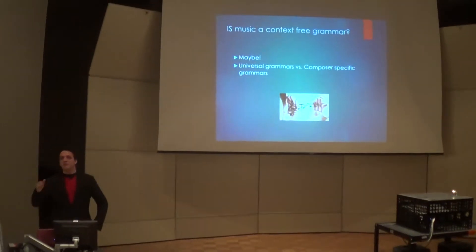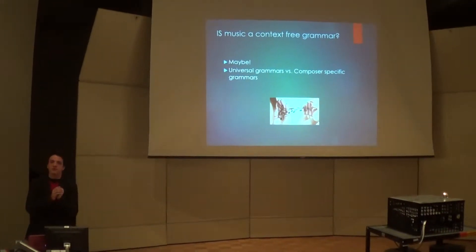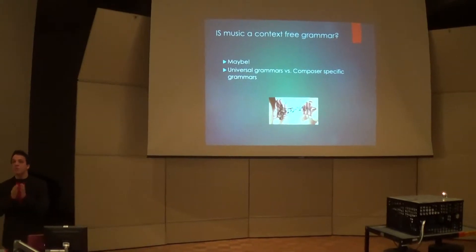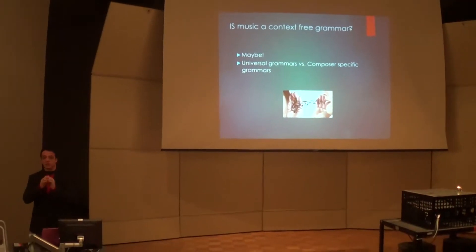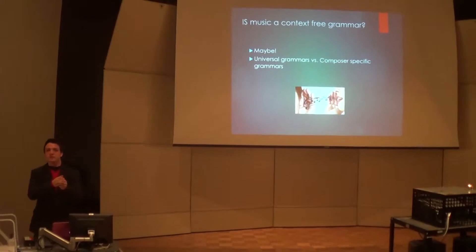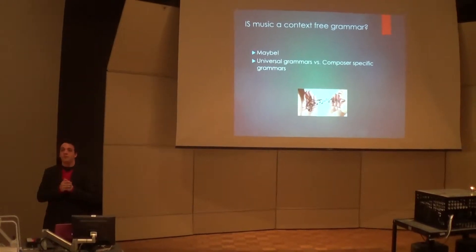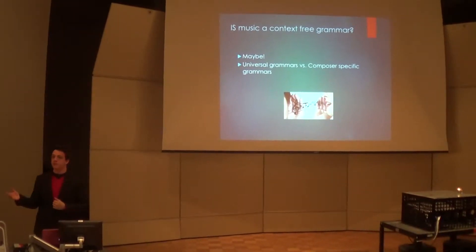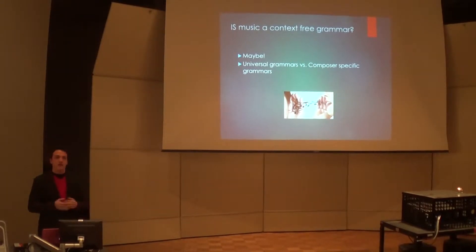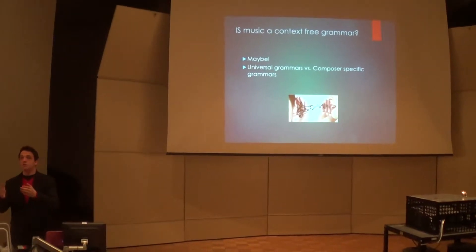If you approach composers and their works through that aspect, you can start to get some interesting information about how to analyze music. Could we possibly see, if you take a large corpus throughout all of music history, that there are certain notes more likely to transition to each other than not, if you take it out of any context? Is an A more likely to go to a C, or more likely to go to a G? That's what I would call a universal grammar in music. Composer-specific grammars are what we're going to be looking at today, through the music of Guillaume de Machaut.